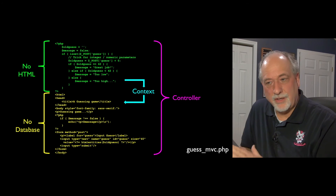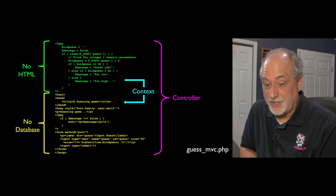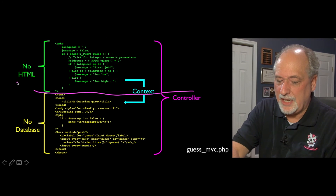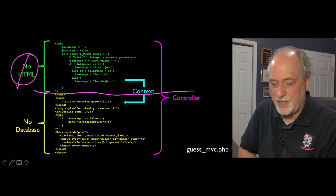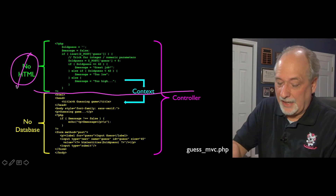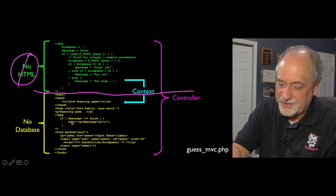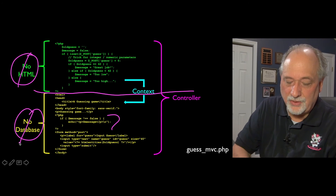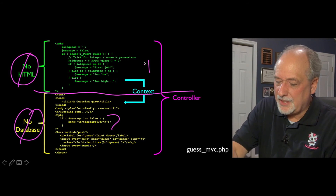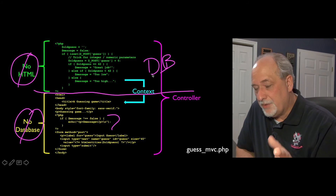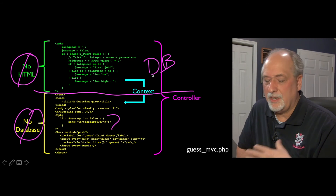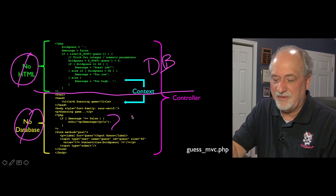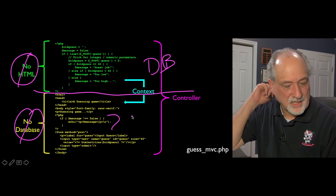Another simple rule: above this line, you're not supposed to produce any HTML — no HTML at all. Below the line you can have little bits of code, like an if statement — that's not a terrible thing — but certainly no database activity. All the database and SQL happens above the line, and then it's just simple rendering with maybe a loop or an if, but nothing that actually talks to the database. That's how I implement model view controller.